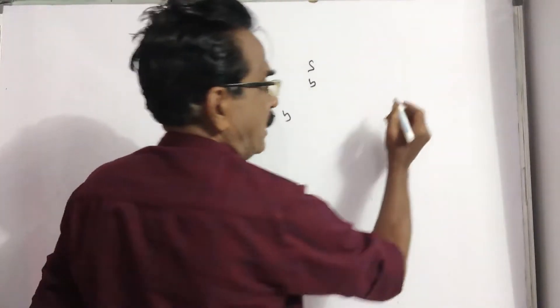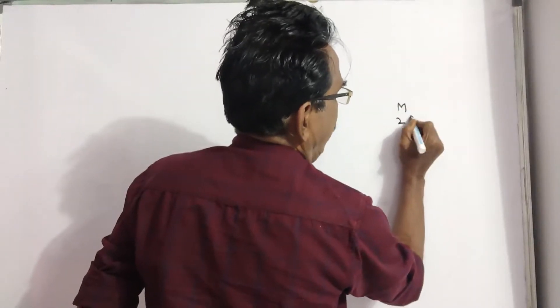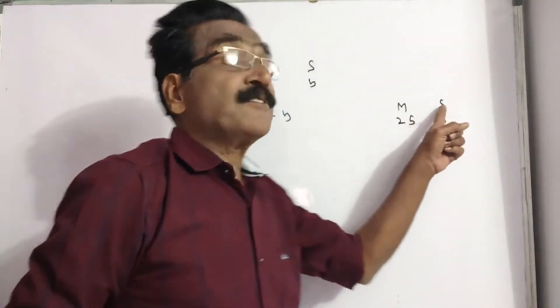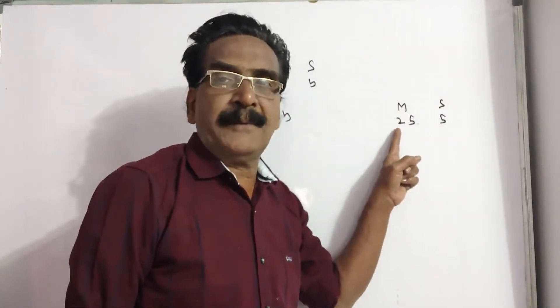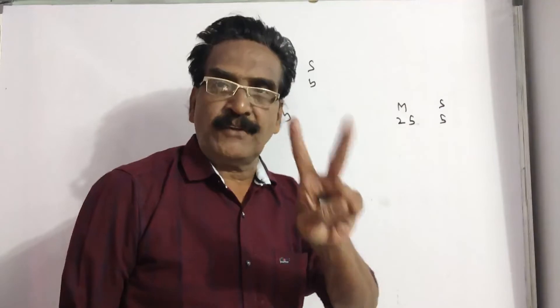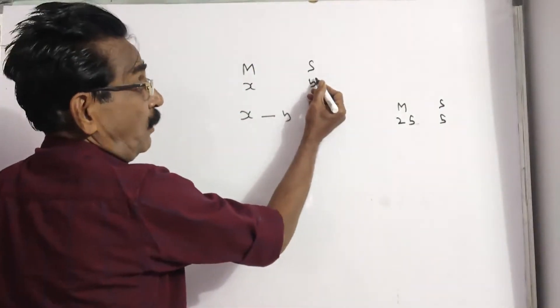Suppose if I consider a small example, say man is 25, son is 5. At the time of son was born, man will be 25 minus 5, 20. So, at the time of son was born,